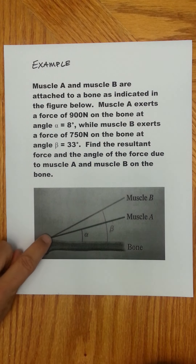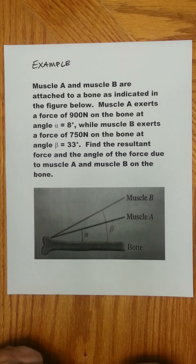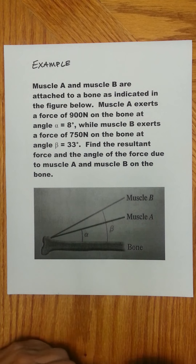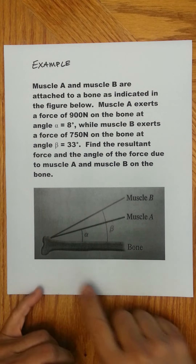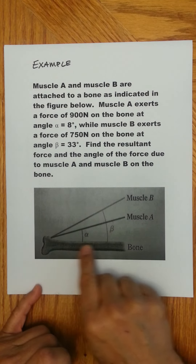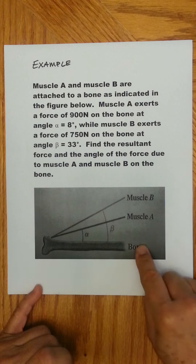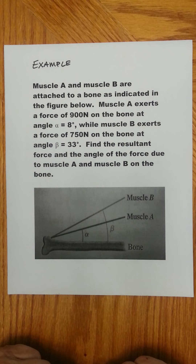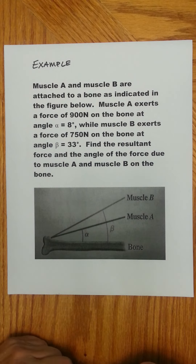They're attached to a bone at this point. Muscle A exerts a force of 900 newtons on the bone at an angle of 8 degrees with the horizontal, and the bone is at 0 degrees. While muscle B exerts a force of 750 newtons on the bone at an angle of beta 33 degrees.